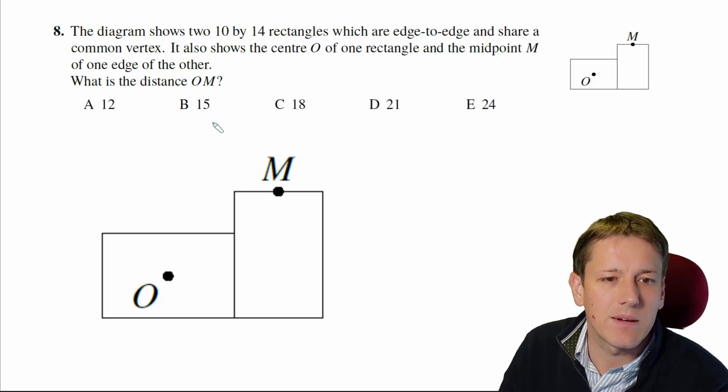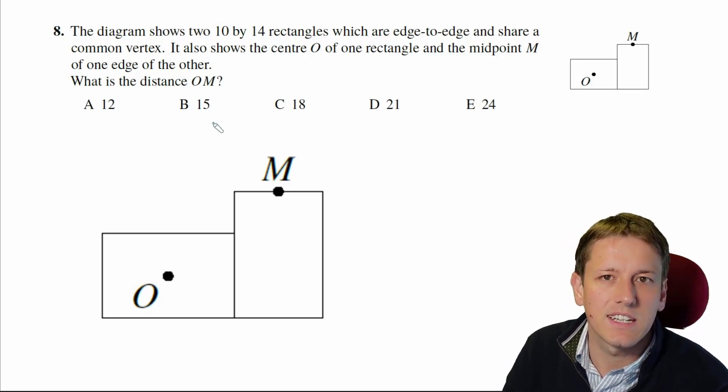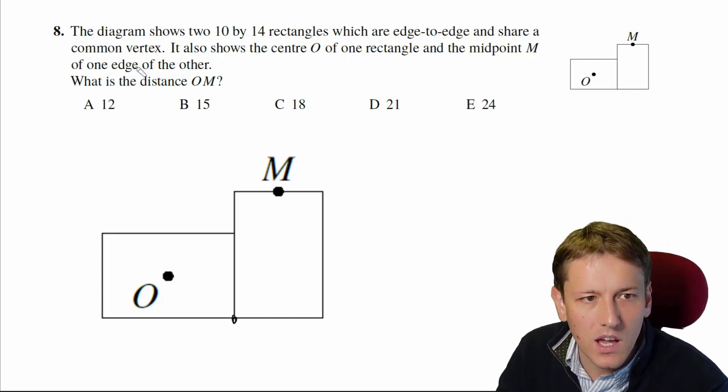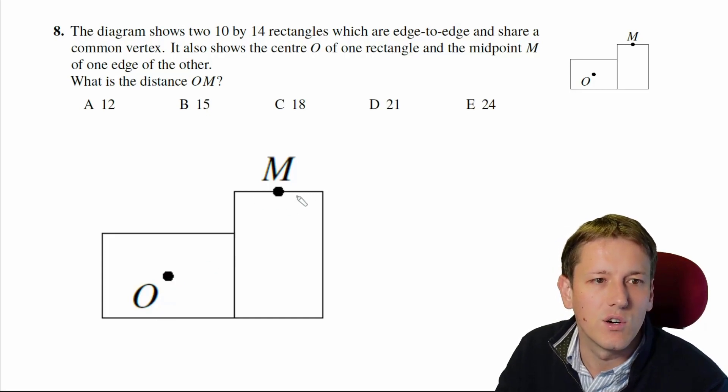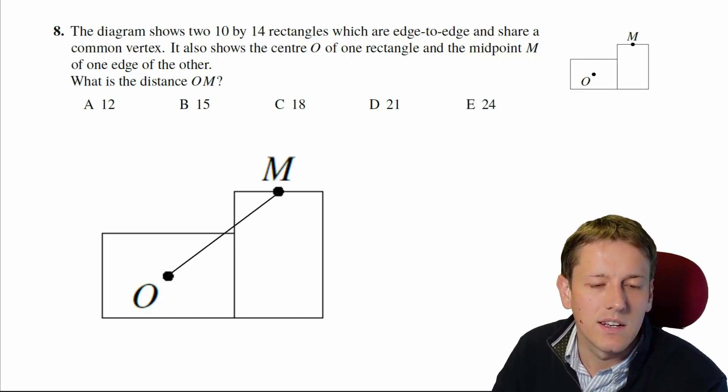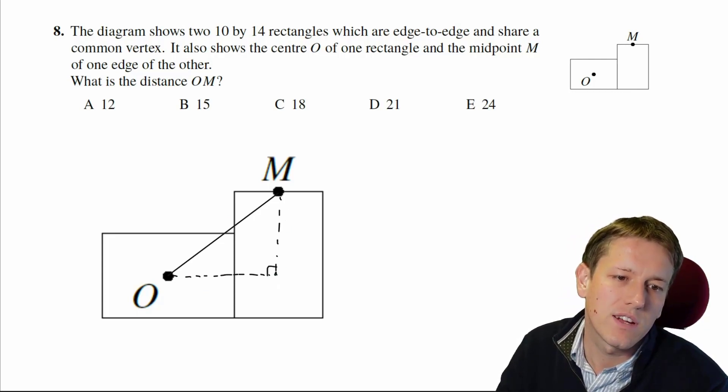In this question I've just made the diagram a bit bigger, but we've got the diagram showing two 10 by 14 rectangles edge to edge, and they share a common vertex, so that's this one here. Also we've got the center of this rectangle and the midpoint of this line, and we want to know what the distance here from O to M here is. Now to work out this distance, we're going to want to use Pythagoras theorem on this triangle here.